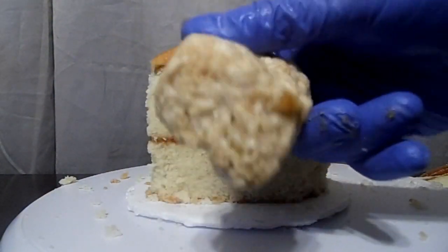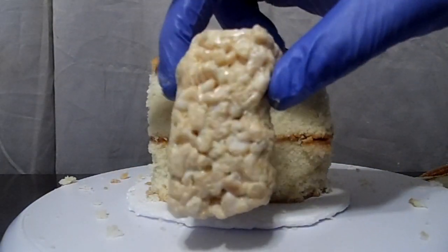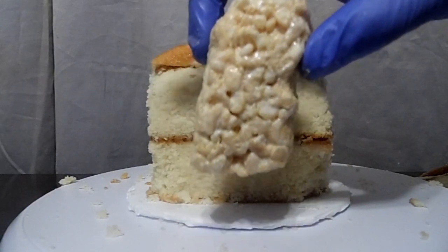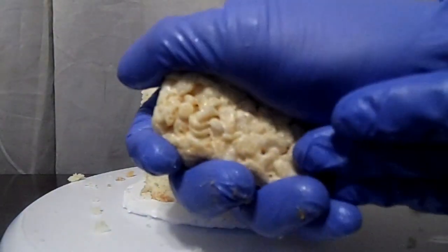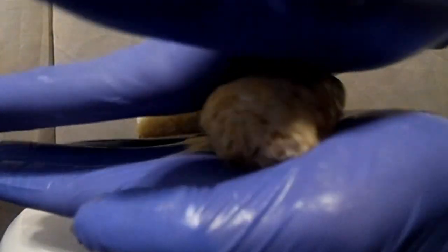And I'll use Rice Krispie Treats to make the neck of the bottle. So you just squeeze it as much as you can, just to compact it in, and to shape it and give you that round cylinder.